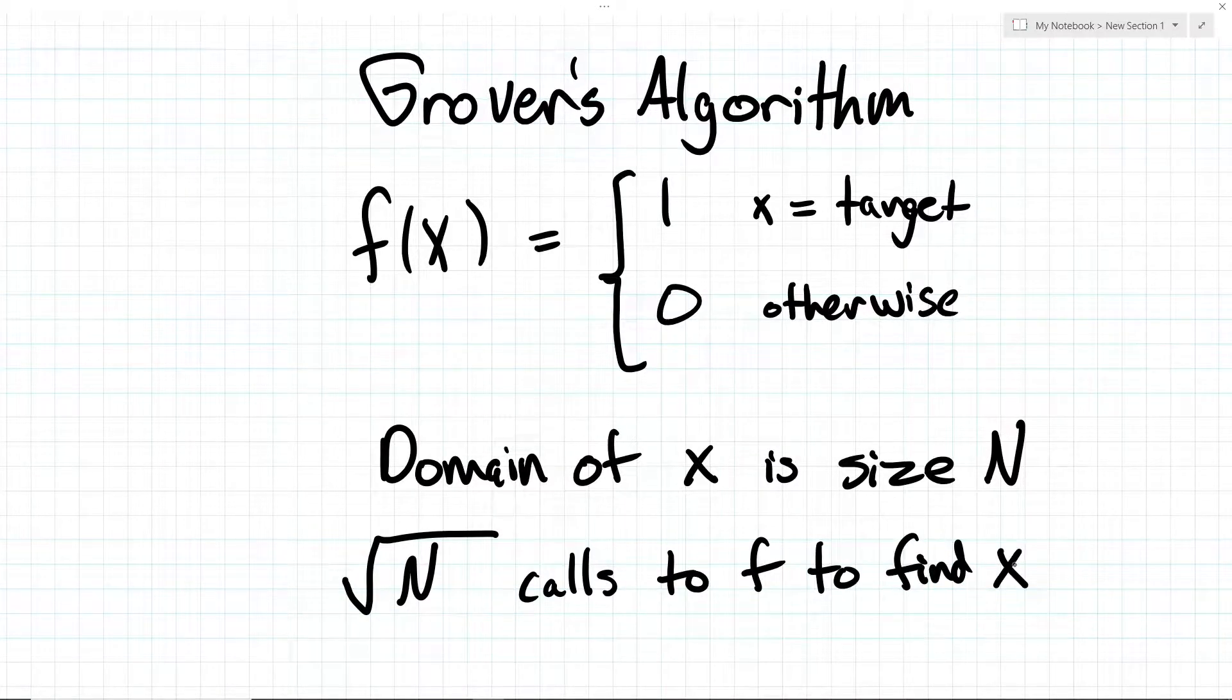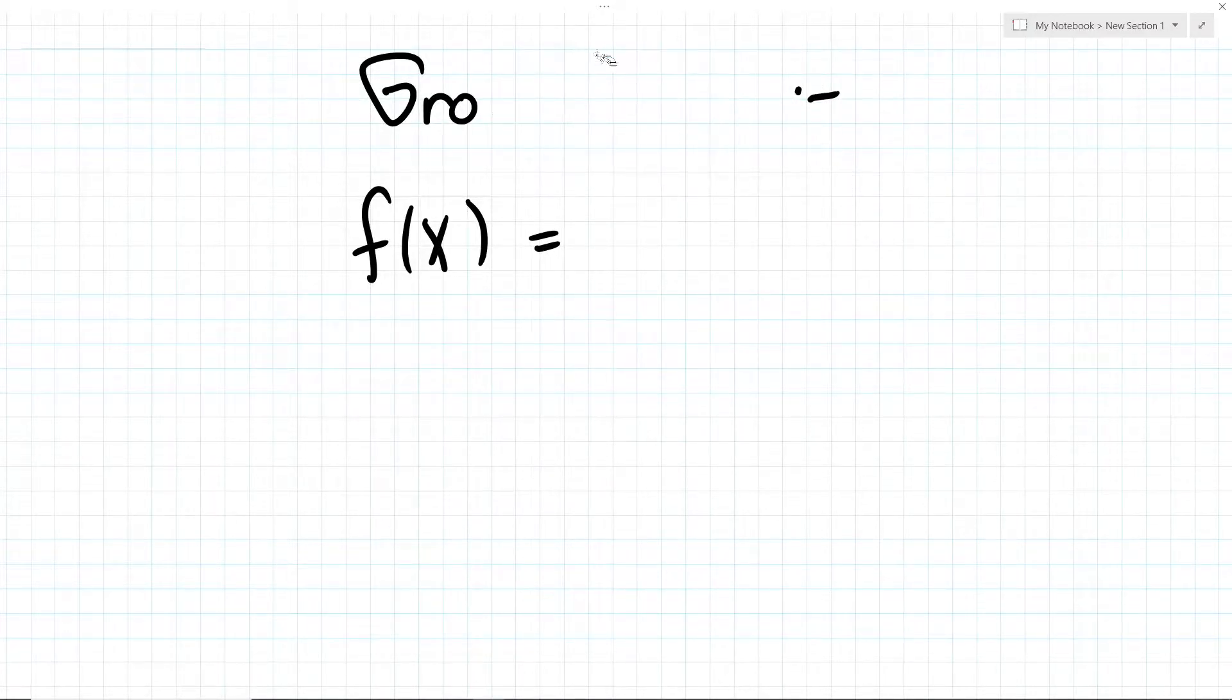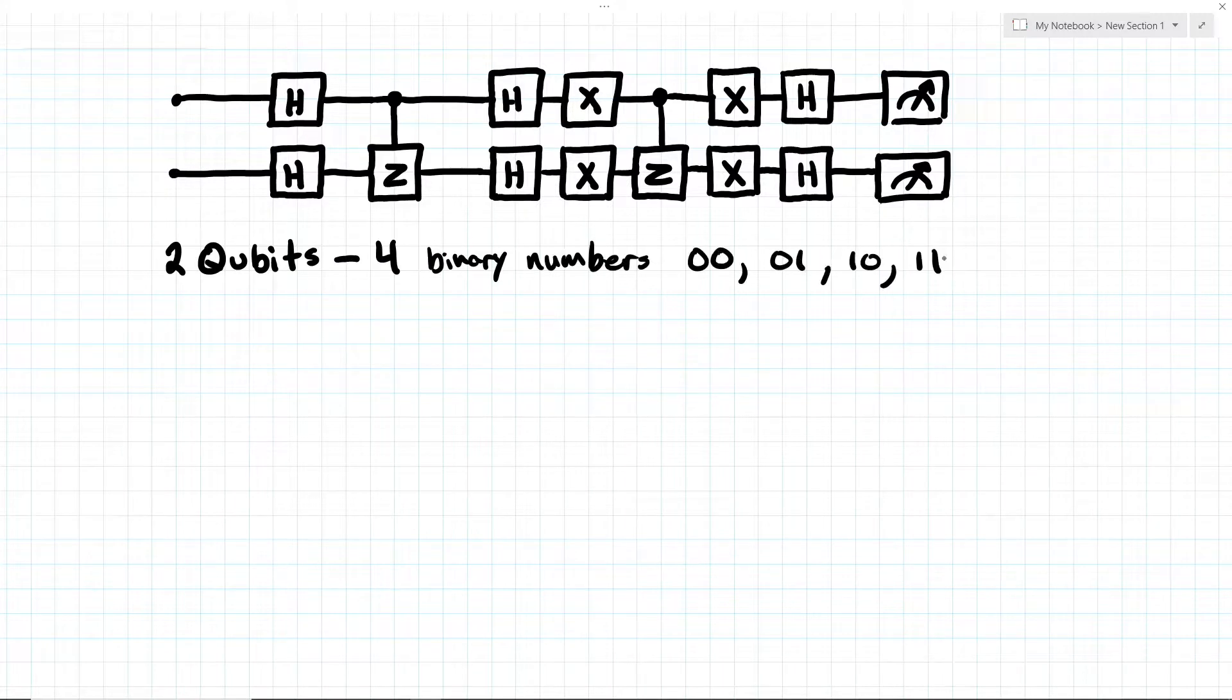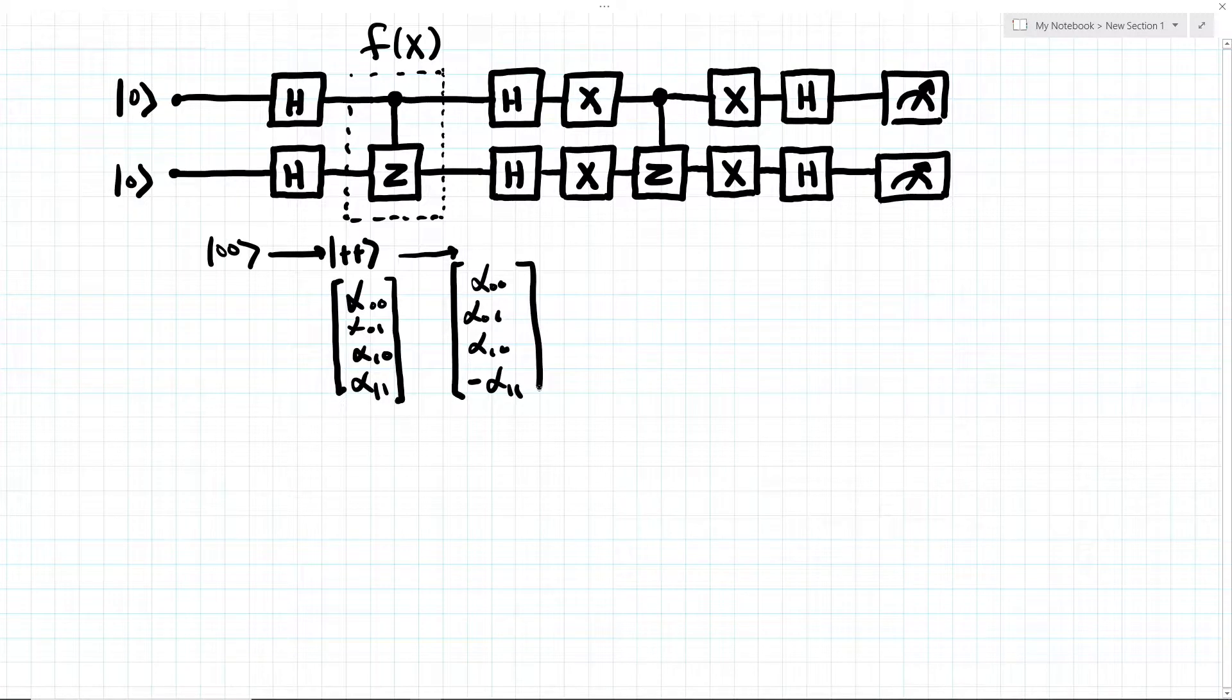I'll be doing a more in-depth video on Grover's algorithm soon, so be sure to subscribe so you don't miss out. So how on earth can a quantum computer do this? Well here is a circuit for doing this on n equals 2 to the power of 2 search space because we have two qubits which represent four binary numbers. First we start in the 0,0 state. Then we apply a Hadamard to every qubit to make our state plus plus. Applying a Hadamard to every qubit at the beginning of an algorithm is an extremely common thing in quantum computing.